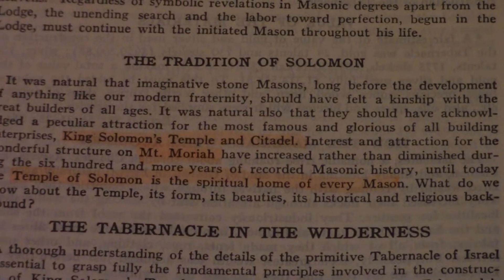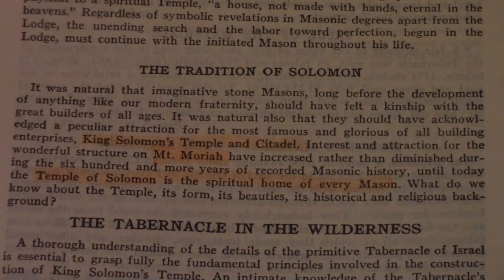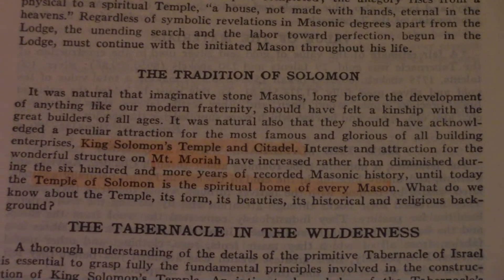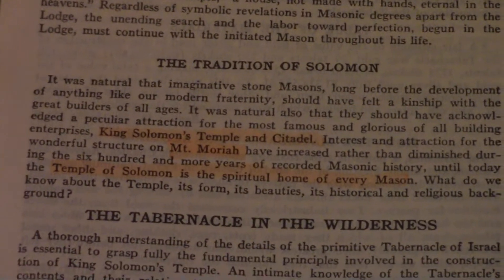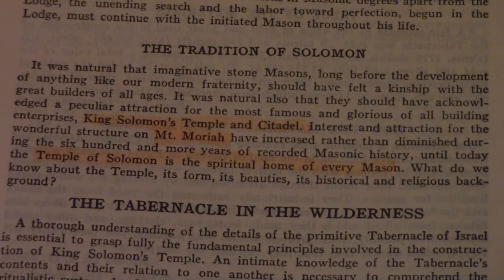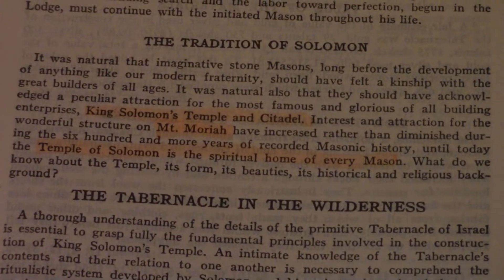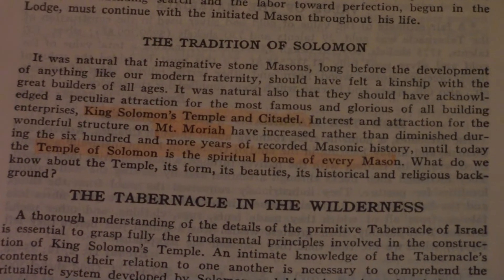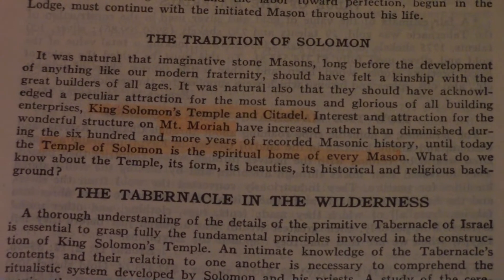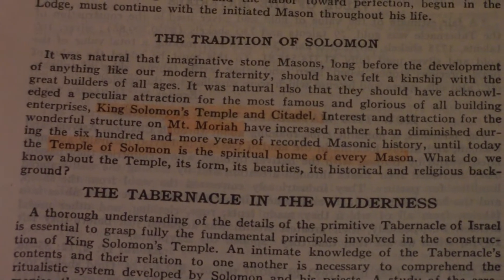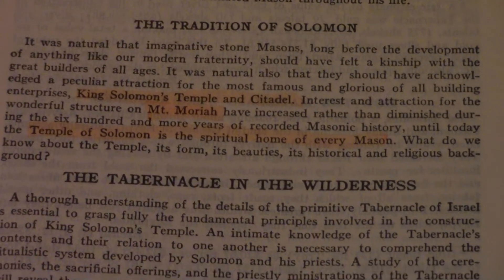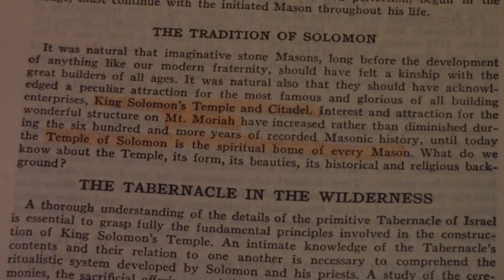It was natural that imaginative stonemasons, long before the development of anything like our modern fraternity, should have felt a kinship with the great builders of all ages. It was natural also that they should have acknowledged a peculiar attraction for the most famous and glorious of all building enterprises — King Solomon's Temple and Citadel. Interest and attraction for the wonderful structure on Mount Moriah have increased rather than diminished during the 600 and more years of recorded masonic history. Until today, the Temple of Solomon is the spiritual home of every Mason.